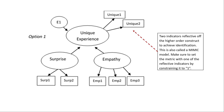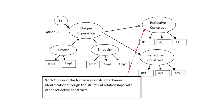That's why it's called a MIMIC model — you have first-order constructs that are formative to the higher-order construct, and then two identification items that are reflective off of it. What I like to do is ask three items so that if two of the three load strongly, I have a safety net. If I only ask two and one falls out, I'm in trouble. So I'll usually ask three but use the best two.